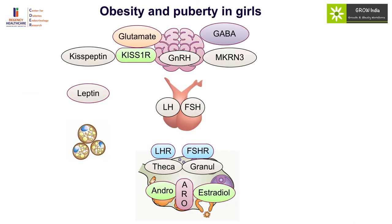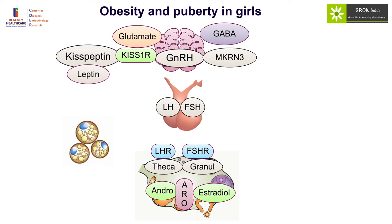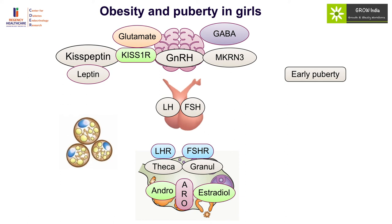Obesity also influences the timing of puberty in girls. Elevated leptin levels in obesity can stimulate early puberty, but severe obesity actually disrupts the gonadotropin pathway and results in stalled puberty. As a result, obese girls tend to have early thelarche, but menarche can actually be delayed.